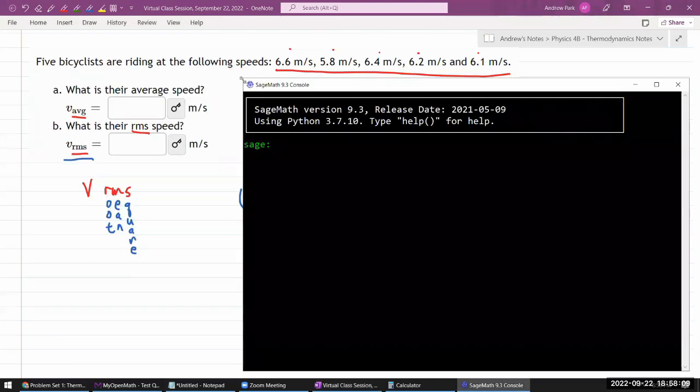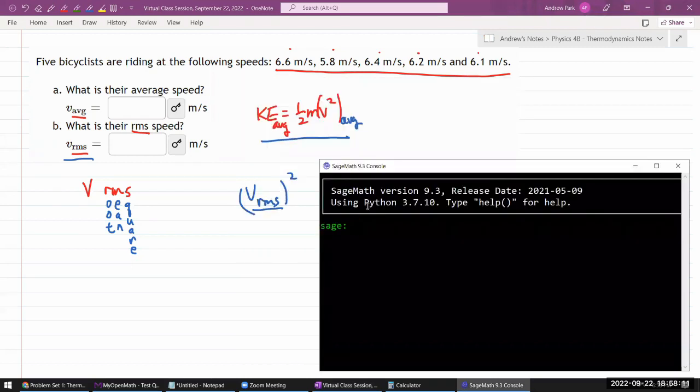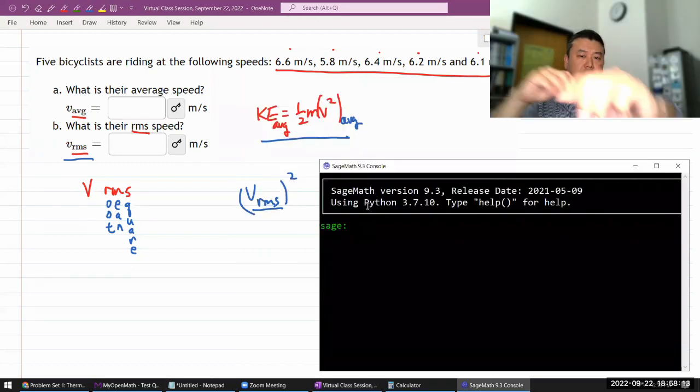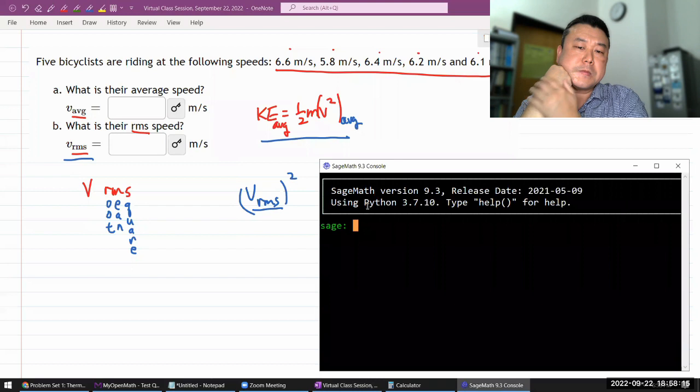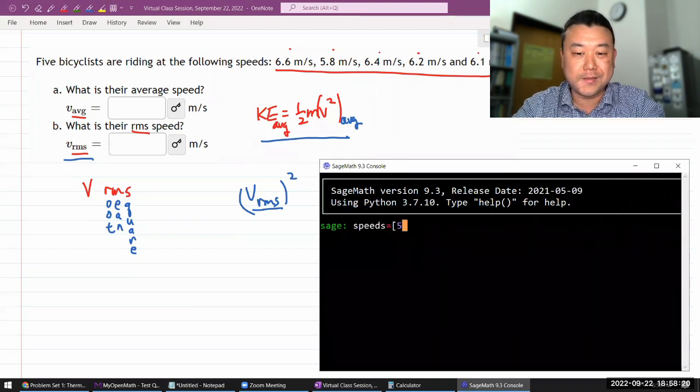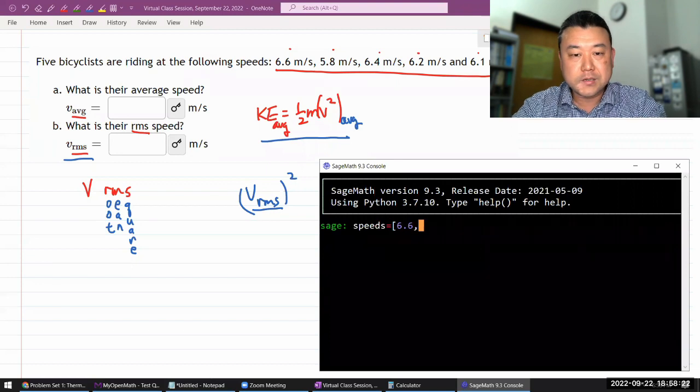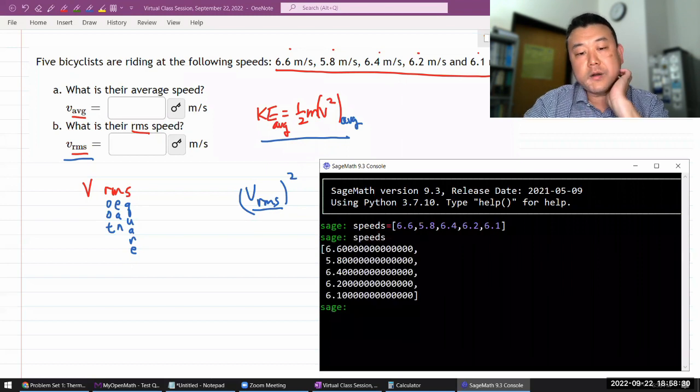This is one of those things where, let's see, do I want to do it programmatically? Let me see if I can do this in Python. 6.6, 5.8, 6.4, 6.2, and 6.1. That's my array of speeds.